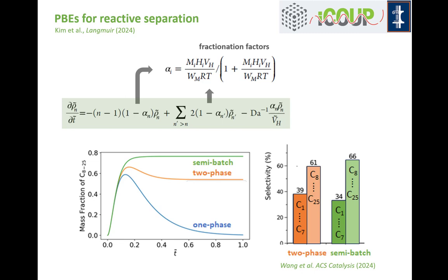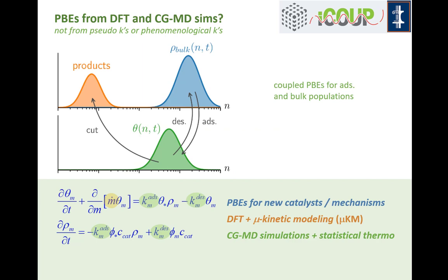A population balance equation derived by Andrew Kim tracks the liquid phase components in this process. If you set the fractionation factor α to 1 for all species and the Damköhler number to 0, you've turned off outflow and allowed only one phase — that's what people sometimes assume but isn't really happening. With a two-phase batch reactor you get some preservation of diesel and middle distillate species. In a semi-batch process with outflow, if you want middle distillate species C8 through C25, the two-phase design does much better than one-phase, and semi-batch does even better still. Experiments have confirmed this predicted boost in productivity.